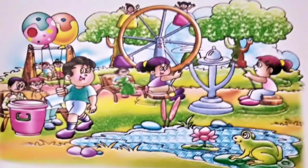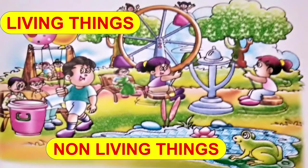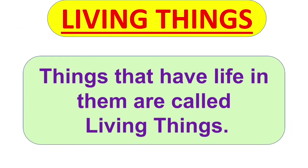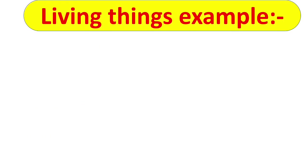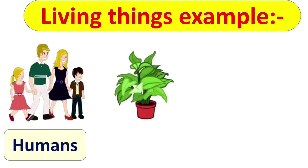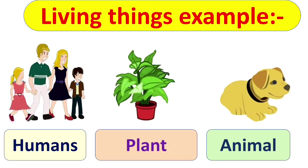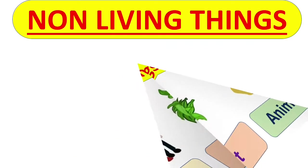We are surrounded by many things. Some are living things and some of them are non-living things. What is a living thing? Things that have life in them are called living things. Let's see some examples of living things: humans, plants and animals, insects or birds. All these are examples of living things.